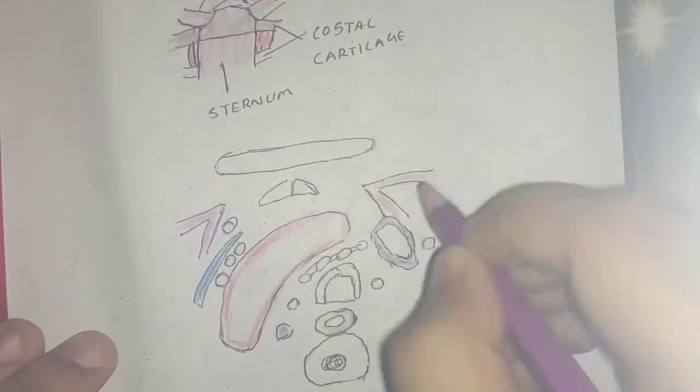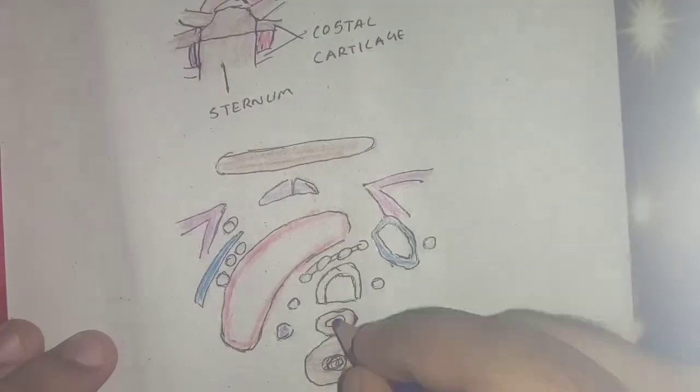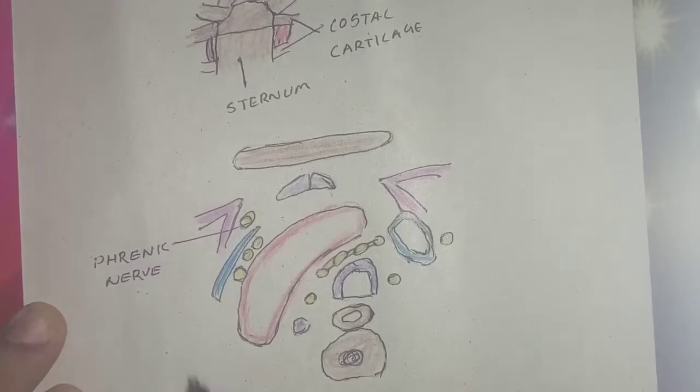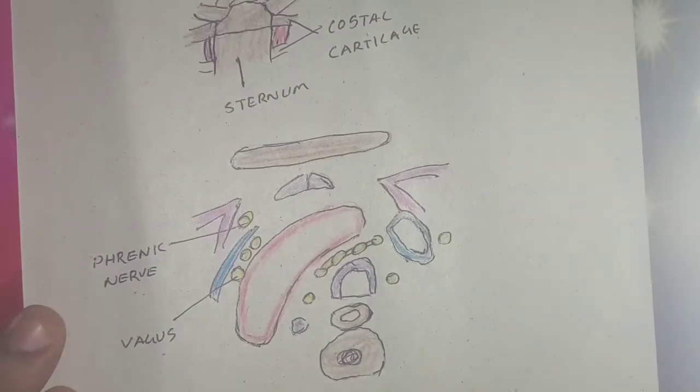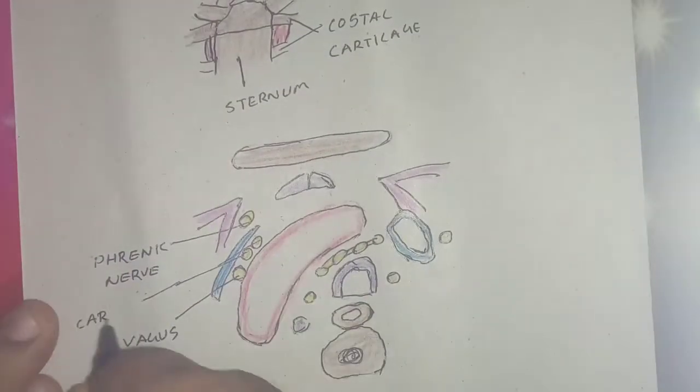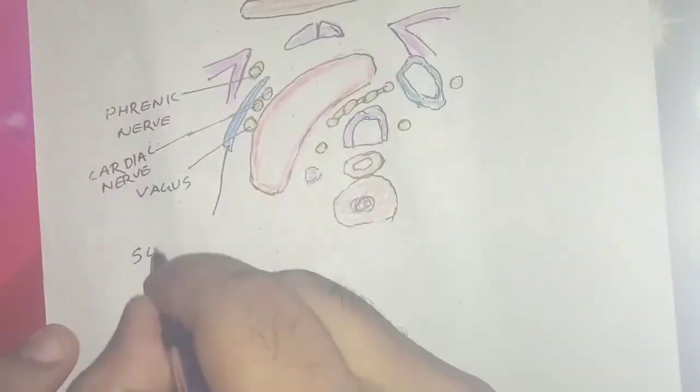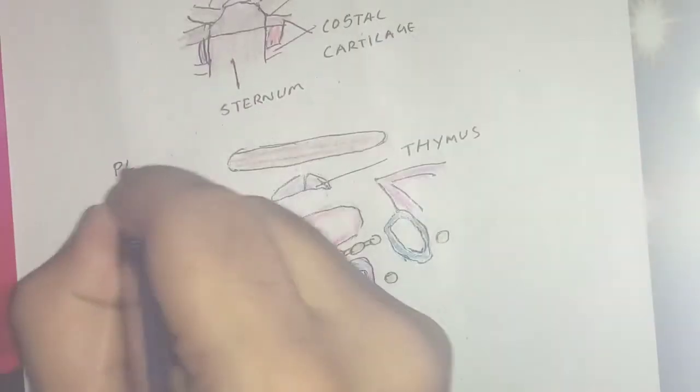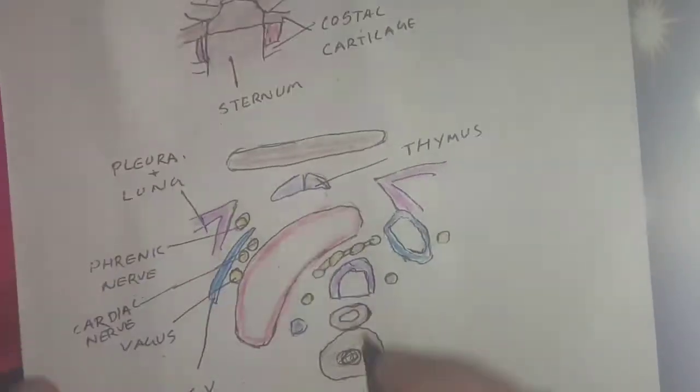Anteriorly, the left phrenic nerve, the vagus nerve, the lower cervical cardiac branch of left vagus, superior cervical cardiac branch of the left sympathetic trunk, and the superior intercostal vein, left pleura, lung, and remains of thymus are the anterior relations.